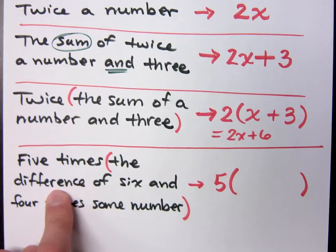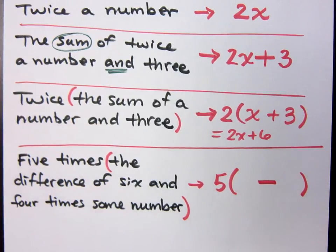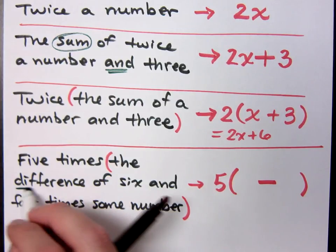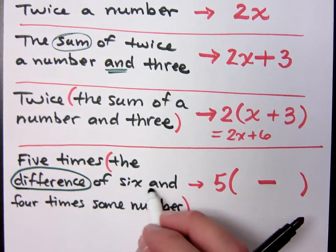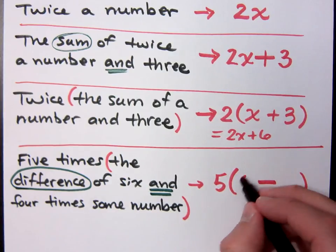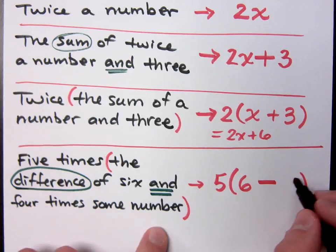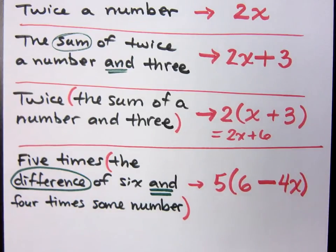Six. Difference? Six minus. Just to remind you guys, the word difference is connected with the word and in this example. What comes before the word and? Six. Six. What comes after the word and? Four times some number. Four times. So I get 4x.